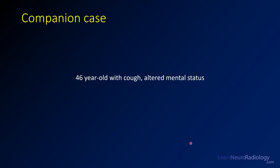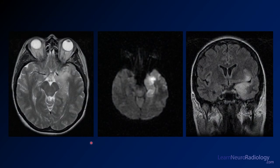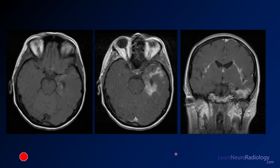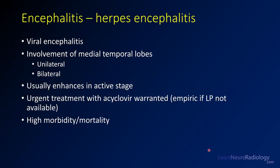The companion case is a 46-year-old with cough and altered mental status. You see a T2, a diffusion, and a coronal FLAIR. Look at the left hippocampus — the left medial temporal lobe, hippocampus, and amygdala are very bright on T2, very swollen, with loss of gray-white differentiation. On diffusion it's very bright and very swollen, confirmed on FLAIR where the medial temporal lobe going up to the sylvian fissure is very swollen and very T2 hyperintense. On post-contrast, there is avid enhancement — almost nodular and cloud-like — in the medial temporal lobe, with enhancement along the sylvian fissures bilaterally, left worse than right. When you see this much diffusion abnormality and this much enhancement, you really need to think about herpes encephalitis.